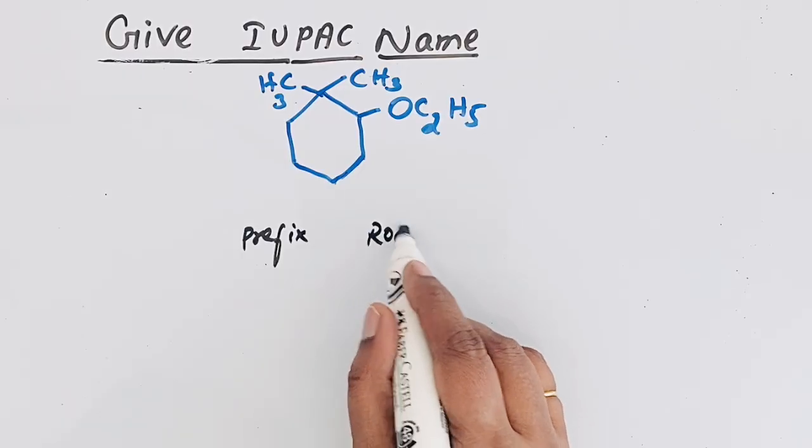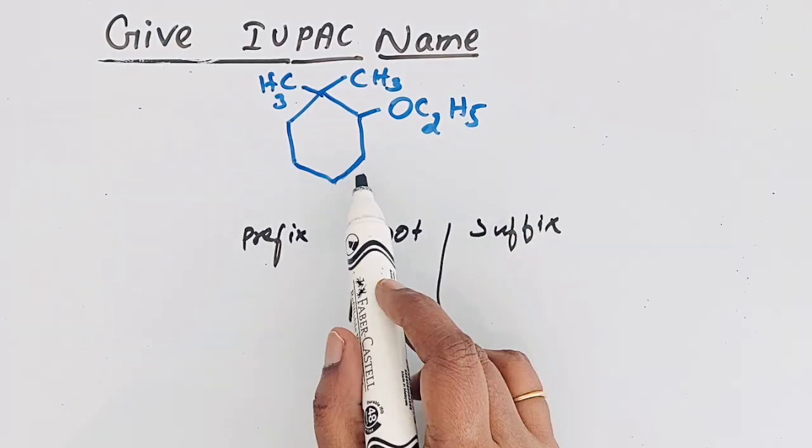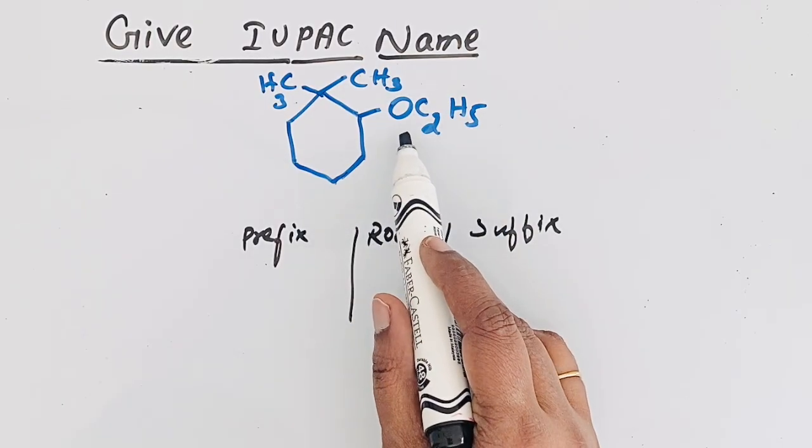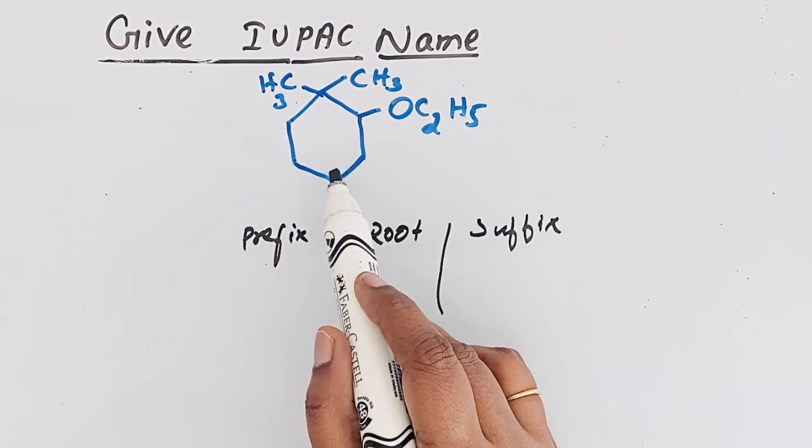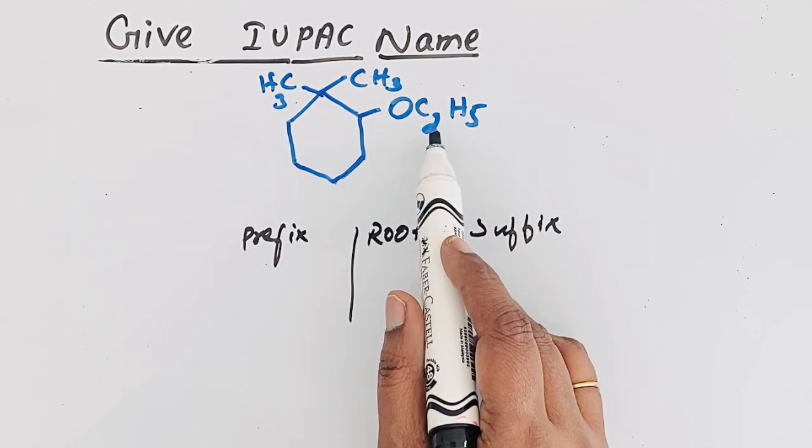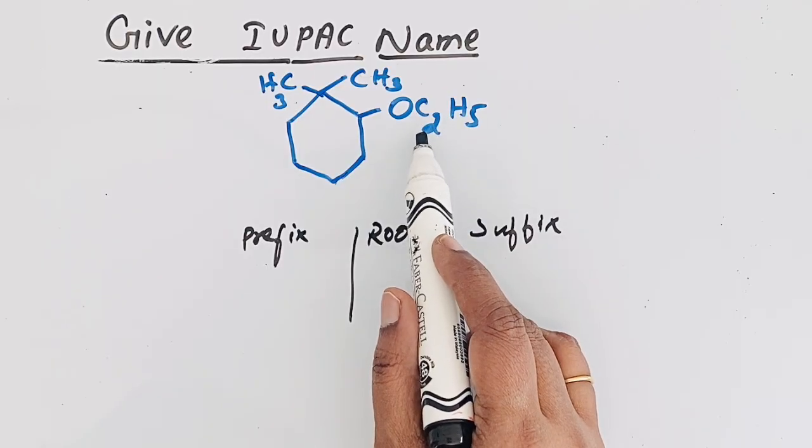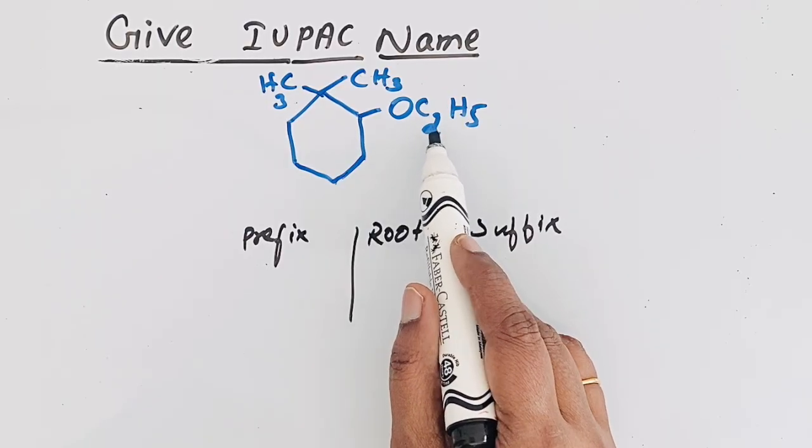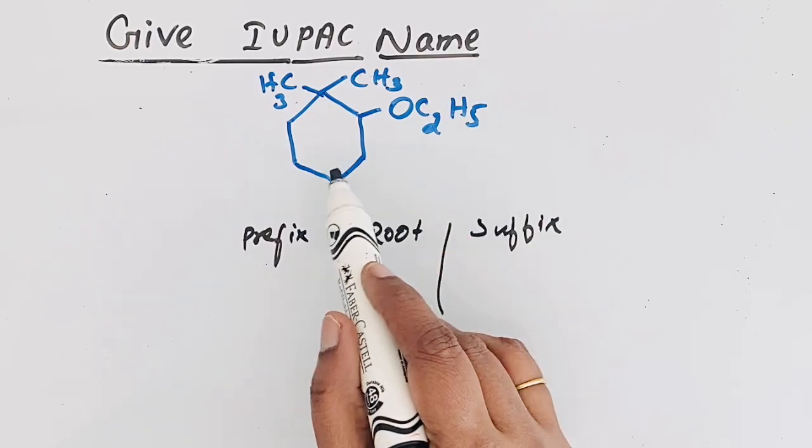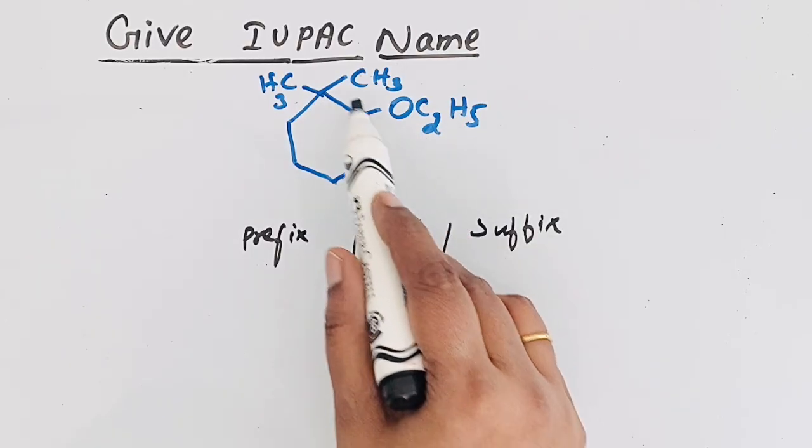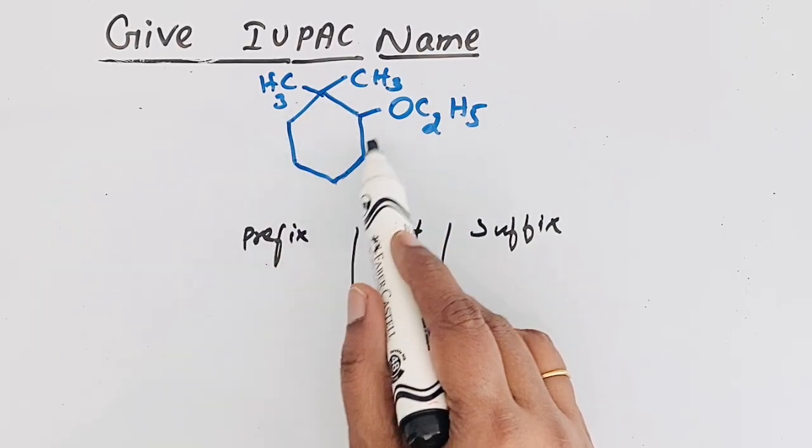Whenever ether is present, the longest hydrocarbon is used as the parent chain. This contains the lowest number of carbon, but this one is considered as the cyclohexane, which is the longest hydrocarbon.